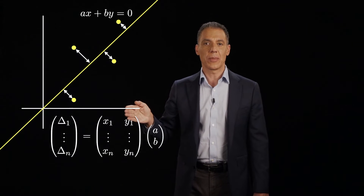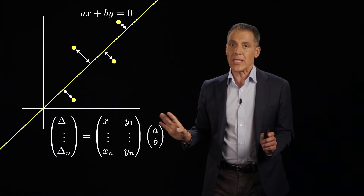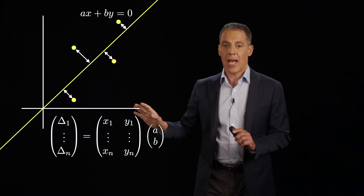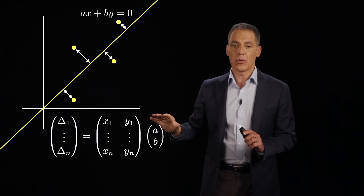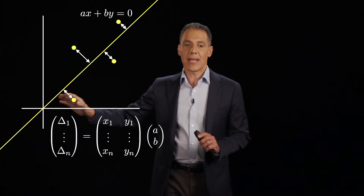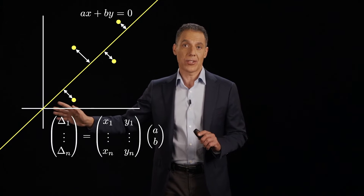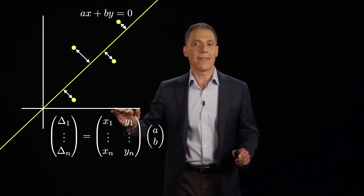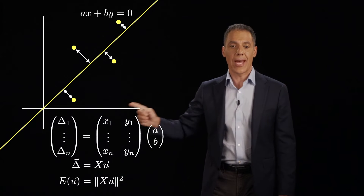If I pack the data into a matrix — not X and 1 as in least squares, but X and Y — and multiply by the unknown vector containing A and B, I get my new deltas: not the vertical distance, not the horizontal distance, but the perpendicular or shortest distance. This matrix looks a little different, but it's very familiar: a matrix times my unknown gives my deltas. I want to square them and sum them, which I know how to do.